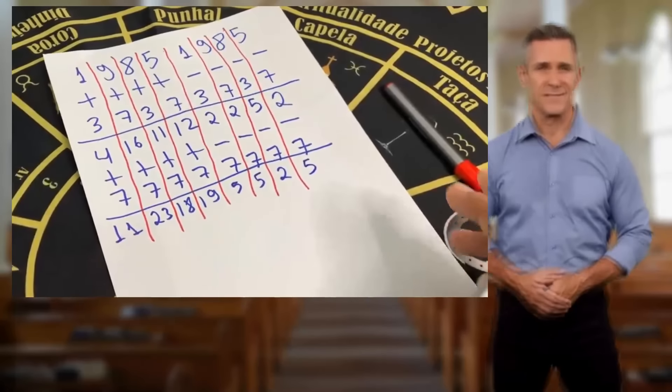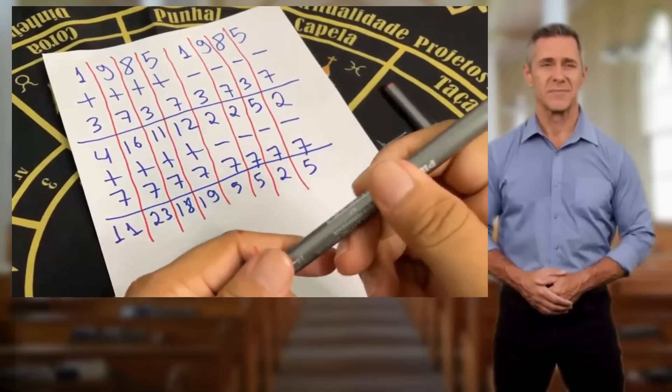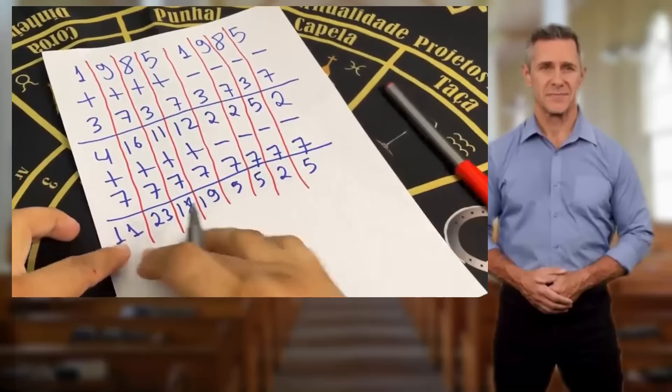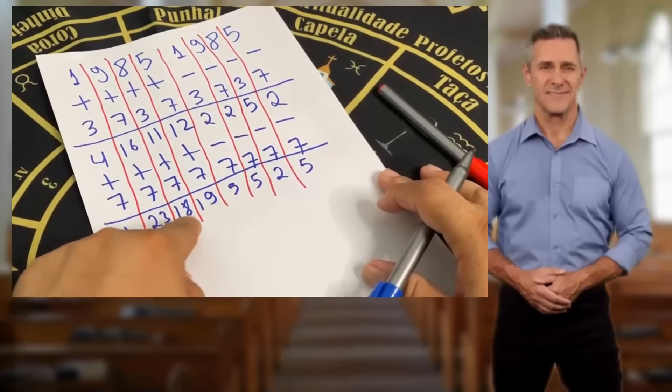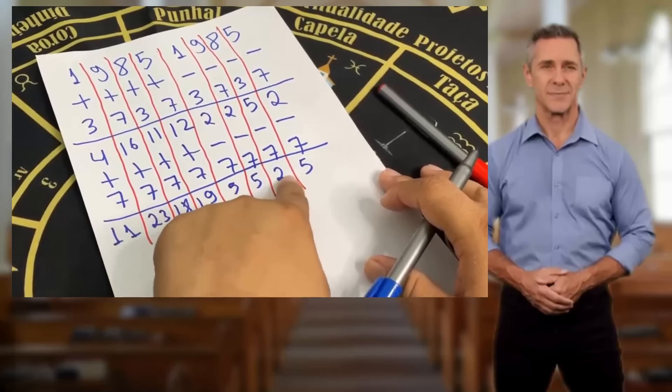Okay, here we have the lucky numbers for you according to your age. Check it out: 11, 23, 18, 19, 55 and 25.